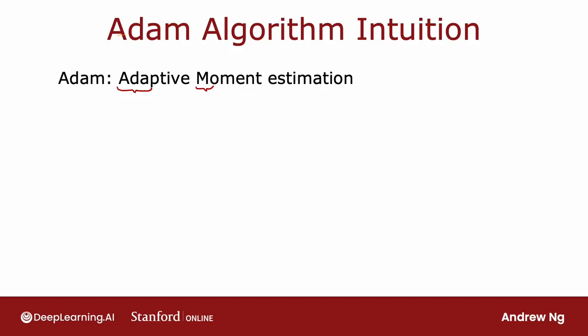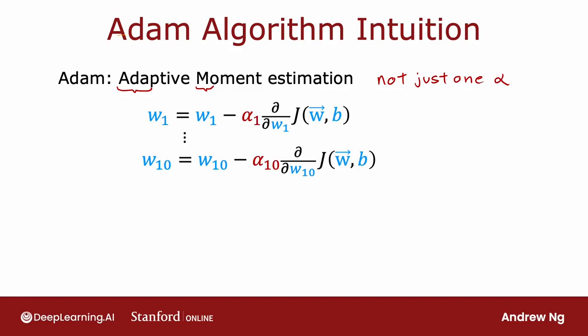But interestingly, the Adam algorithm doesn't use a single global learning rate alpha. It uses a different learning rate for every single parameter of your model. So if you have parameters w1 through w10 as well as b, then it actually has 11 learning rate parameters, alpha1, alpha2, all the way through alpha10, for w1 through w10 as well as alpha11 for the parameter b.